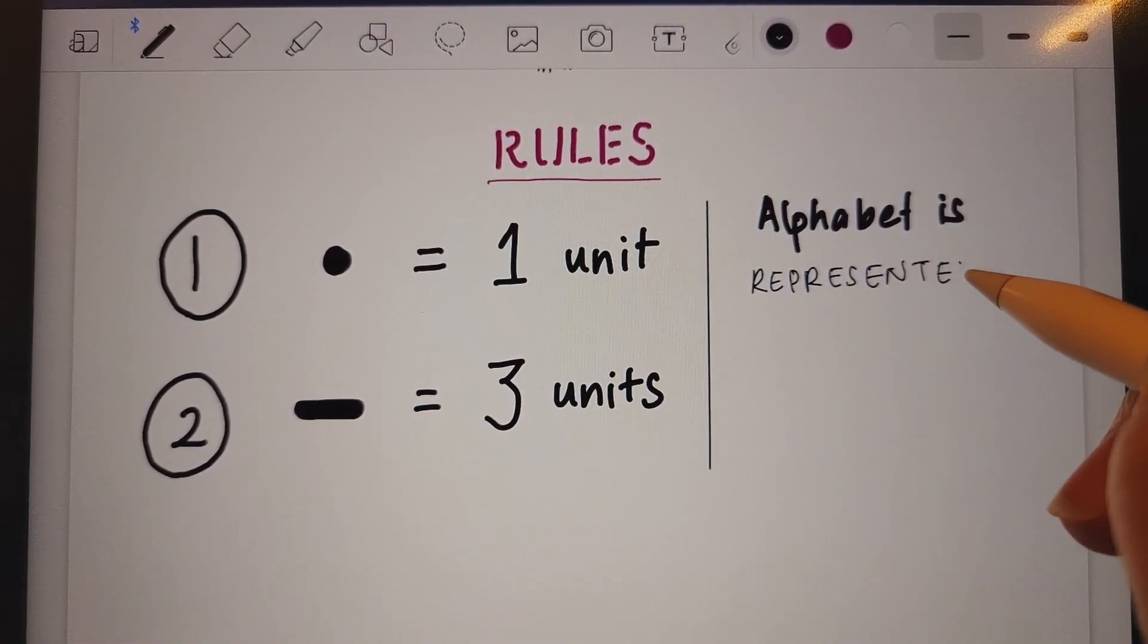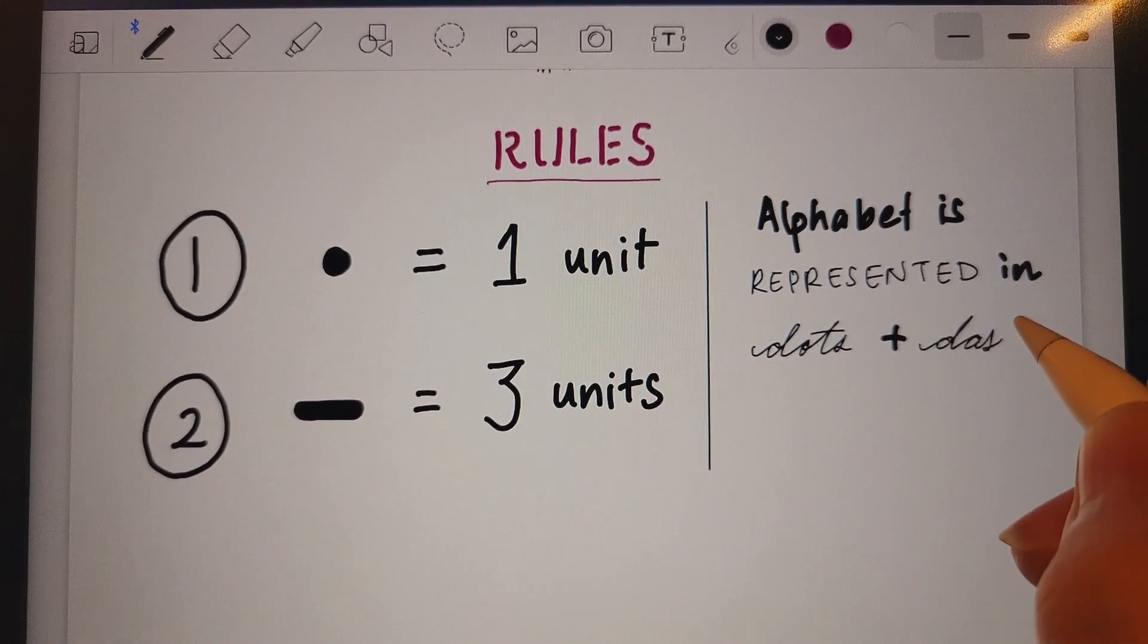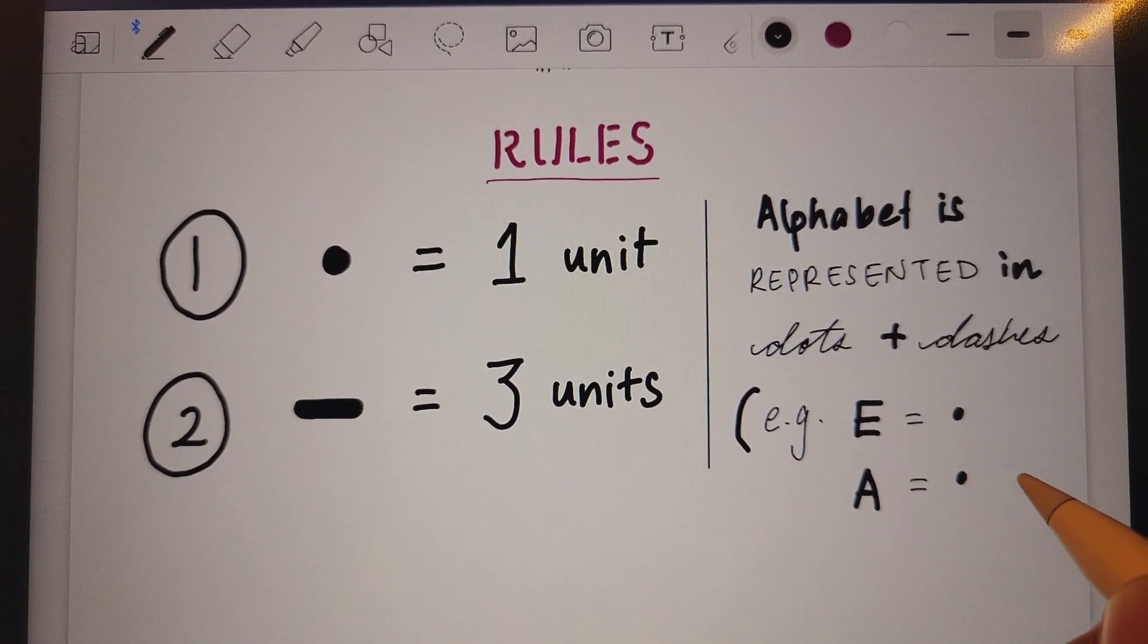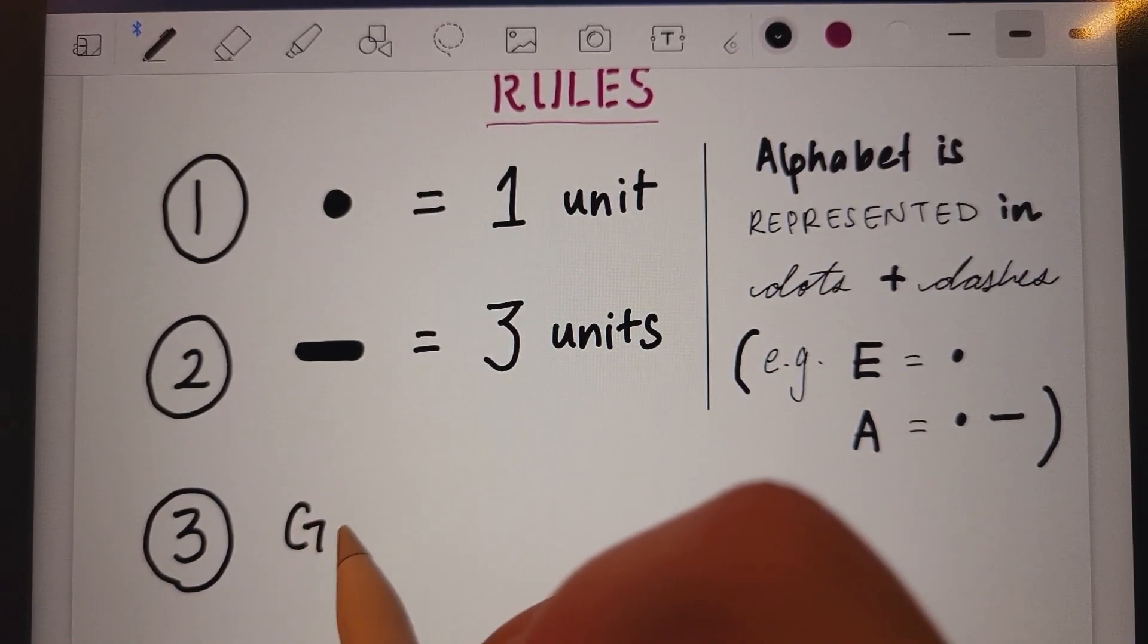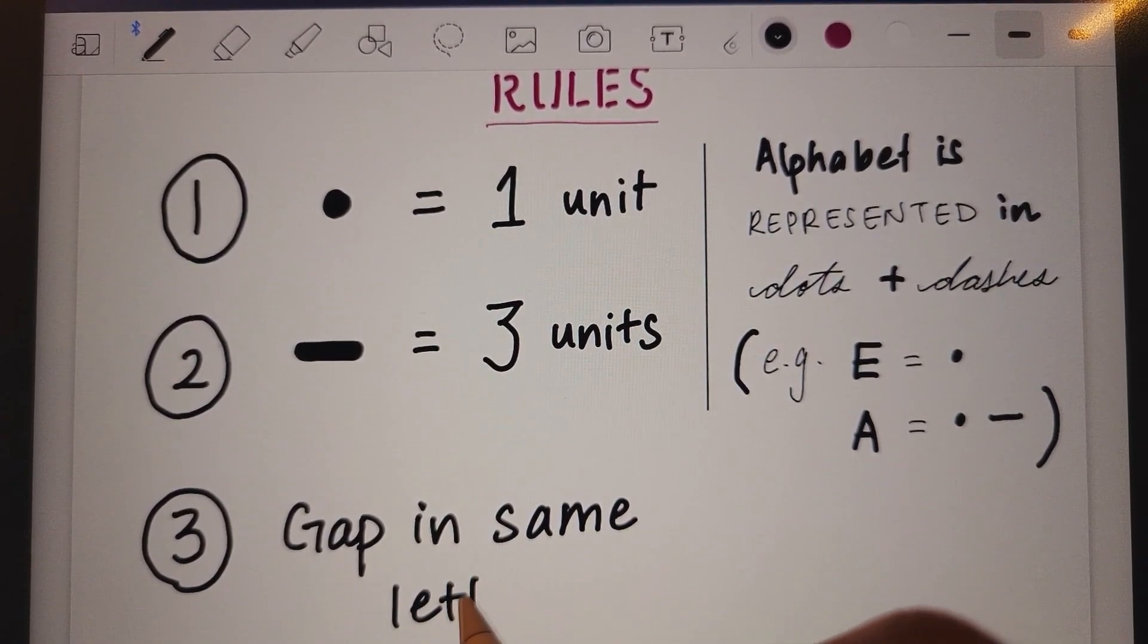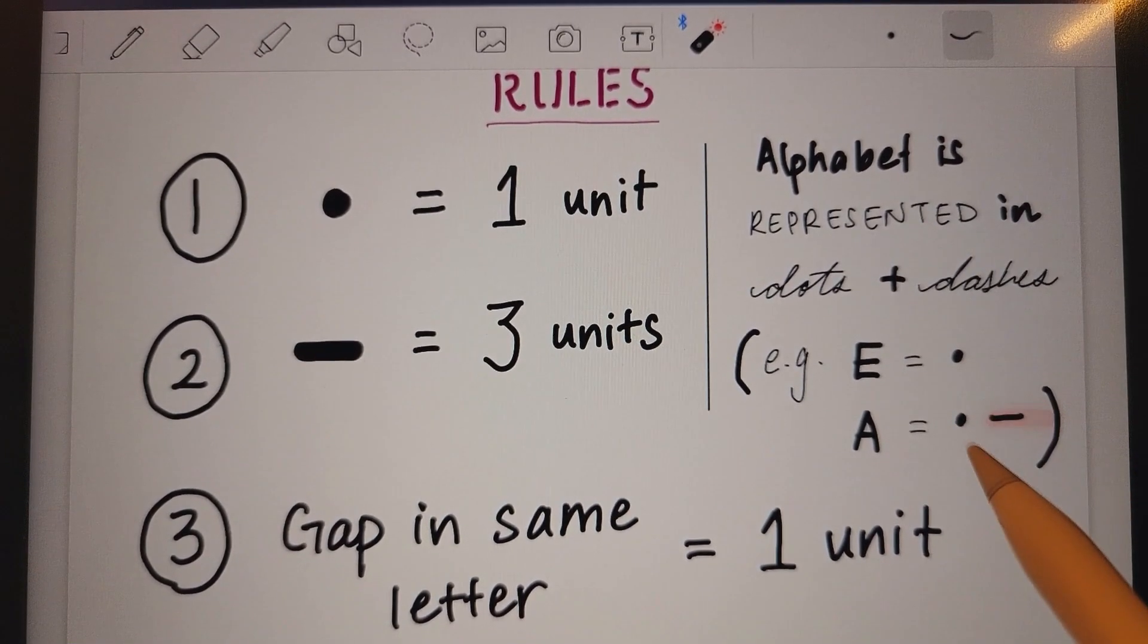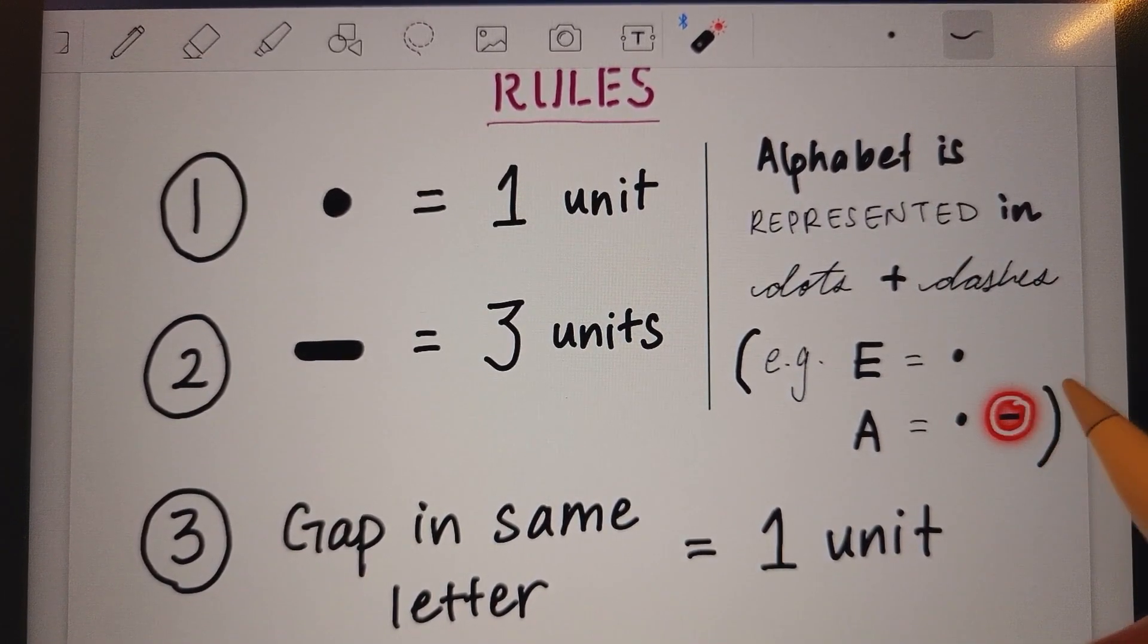So, the alphabet, the English alphabet is represented in dots and dashes. For example, the letter E is actually equivalent to one dot. Meanwhile, the letter A is equivalent to one dot and a dash. So, now that you know this, moving on to rule number three. Gap in the same letter. So, equivalent to one unit. What does that mean? Like I said, A is made up of a dot and a dash. One unit for the dot, one unit for the gap, and three units for the dash.